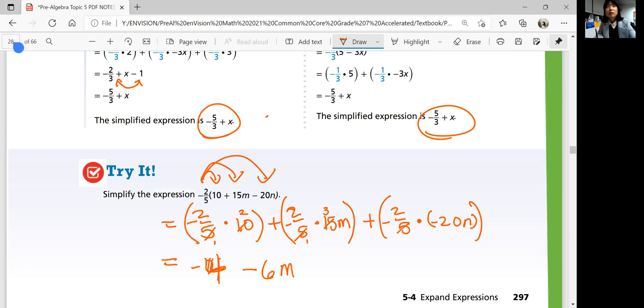And negative 2 times 3 is negative 6m. Okay, and then this one, divided by 5, again. And negative times a negative is positive. So you have positive 2 times 8. 2 times 4 is 8. So 8n, okay? So that is your simplified form.